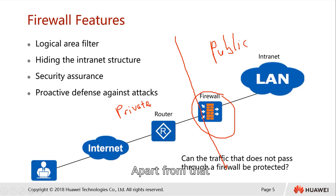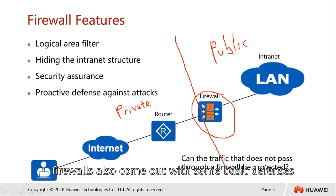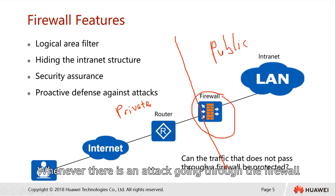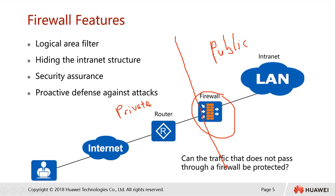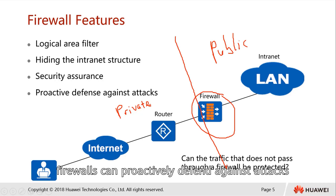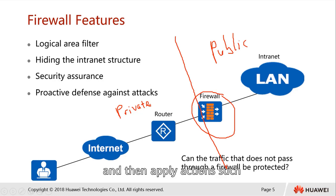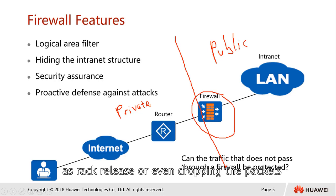Apart from that, the firewall also provides some basic defense against the most common attacks that happen nowadays. Whenever there is an attack going through the firewall, the firewall can proactively defend against the attack by applying some policy — for example, identifying the attack based on the IP or based on patterns, and then applying actions such as blacklisting or even dropping the packets.